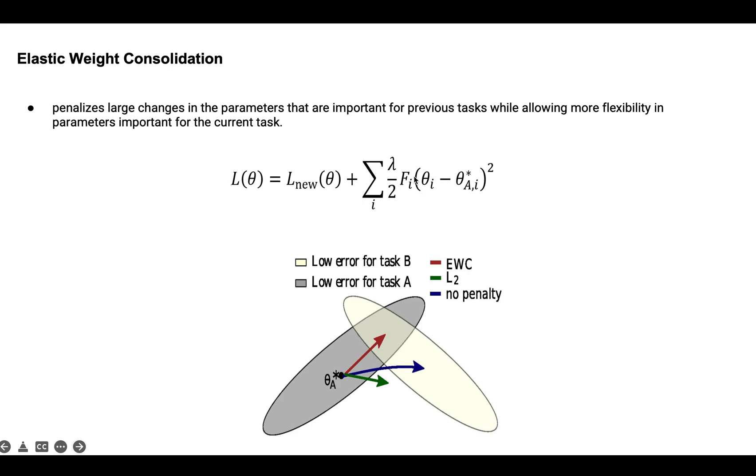And the more important the weights are, the stronger the spring is, meaning that the Fisher information metric is higher. So EWC assigns a larger penalty to more important weights from before and a smaller penalty to less important weights.